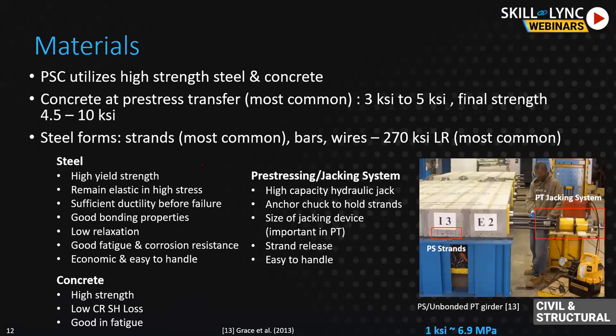For prestressed concrete, we mostly use 270 ksi low relaxation strand - we'll talk about what that means. You can see how high that is compared to reinforced concrete. In regular reinforced concrete you might have seen 2.5 to 4 ksi concrete, mostly in footings or slabs, whereas we can go as high as 10 to 25 ksi in prestressed concrete, and we'll talk about why we need that high strength.